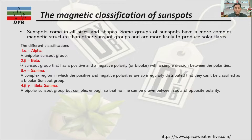The fourth classification is Beta-Gamma, a combination of the second and third classifications. In this case we have a bipolar sunspot group that is complex enough so that no clear line can be drawn between the polarities.